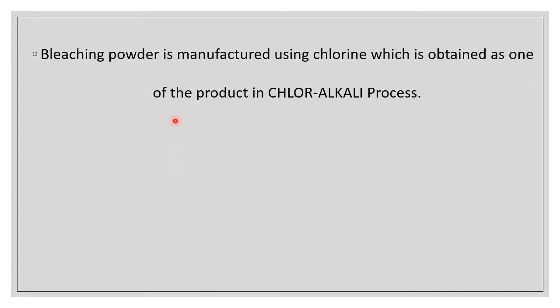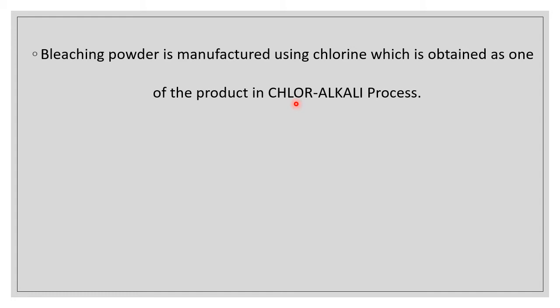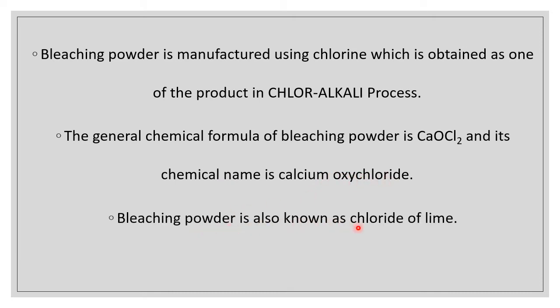Bleaching powder is manufactured using chlorine, which is obtained as one of the products in the chloralkali process. Recall the chloralkali process of sodium hydroxide, where we obtained hydrogen, sodium hydroxide, and chlorine — all three are industrially very useful. Out of the three, chlorine is taken today to prepare bleaching powder. The chemical formula of bleaching powder is CaOCl₂ and its chemical name is calcium oxychloride. Bleaching powder is also known as chloride of lime — lime is CaO, so chloride of lime is CaOCl₂, which is calcium oxychloride, popularly known as bleaching powder.